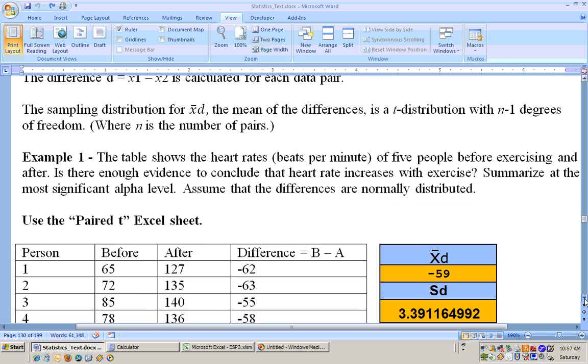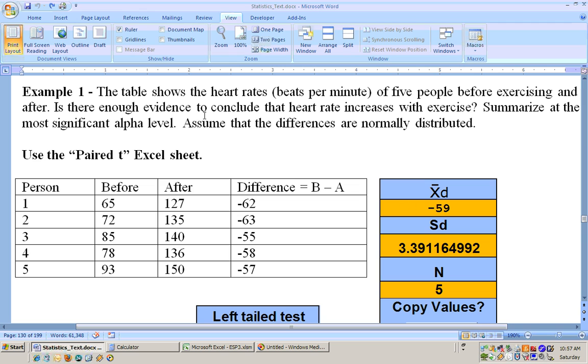Let's go ahead and do the first example here. The table shows the heart rates in beats per minute of five people before exercising and after. Is there enough evidence to conclude that the heart rate increases with exercise? Summarize at the most significant alpha level. Here's the heart rate before the exercise, and here's the heart rate, same five people, after the exercise.